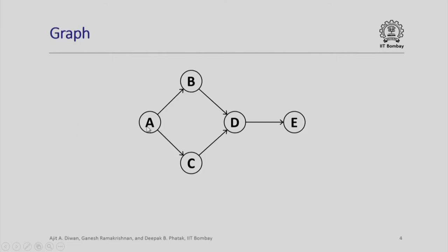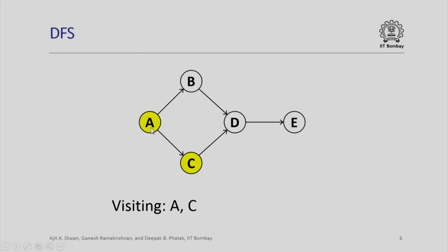Let us look at a graph which has A, B, C, D, E as five nodes, and these are the directed edges. Let us assume that A is the starting node of the graph. We start the algorithm by visiting A. Next, we will look at the nodes which are adjacent to A when we visit A. We will get nodes in the order B and C, of which in the depth first search, C will come first as we shall see.